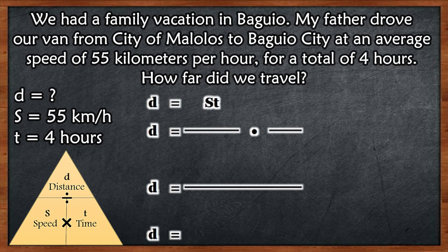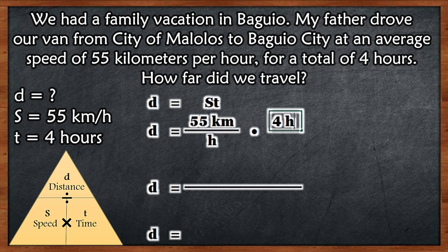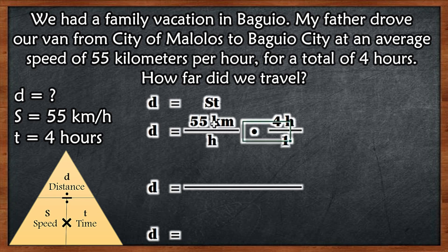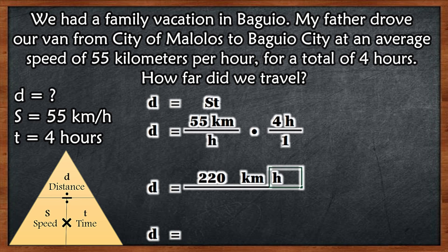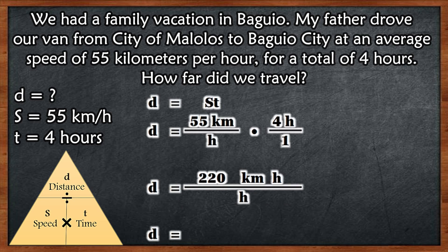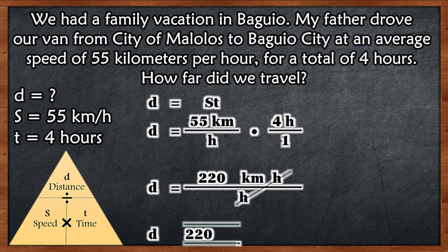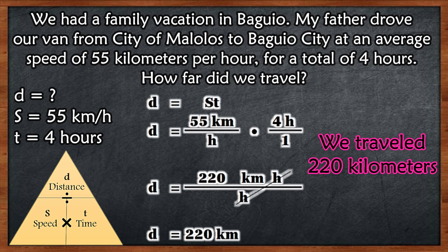Now let's solve for distance. Distance is equal to speed times time. Speed is equal to 55 kilometers per hour, and time is 4 hours. We write 4 over 1, then multiply: 55 kilometers times 4 hours equals 220 kilometer-hours. Hour divided by hour is 1, so 1 times 220 equals 220 kilometers. The distance is equal to 220 kilometers.